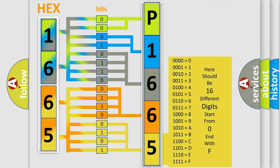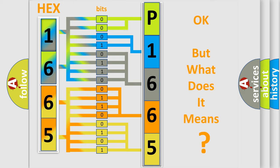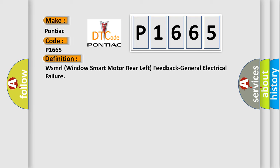We now know in what way the diagnostic tool translates the received information into a more comprehensible format. The number itself does not make sense to us if we cannot assign information about what it actually expresses. So, what does the diagnostic trouble code P1665 interpret specifically for Pontiac car manufacturers? The basic definition is: WSMRL — Window Smart Motor Rear Left — Feedback General Electrical Failure.